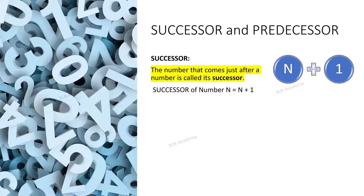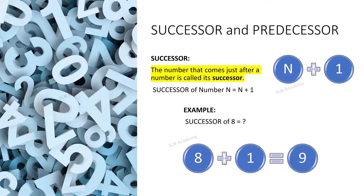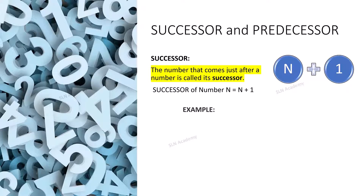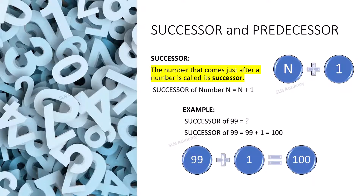Let me give you some examples. What is the successor of 8? Successor of 8 equals 8 plus 1, which equals 9. What is the successor of 99? Successor of 99 equals 99 plus 1, that is 100.